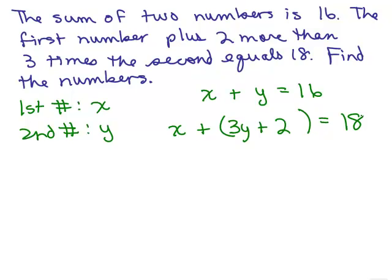Those are our two equations. Now at this point you can use the substitution or the addition method. I'm going to take the second equation and simplify it so I've got the variables on one side and constants on the other. To do that, I need to subtract two from both sides. So the second equation becomes x plus 3y equals 16.